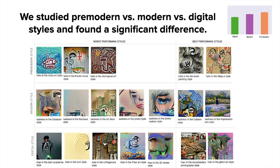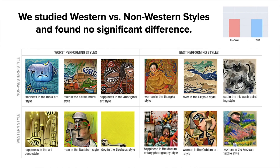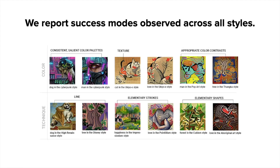However, the difference between Western and non-Western styles was not significant. We concluded that when choosing the style of generation, one can feel free to try any style no matter how niche or broad. In addition to this quantitative analysis, we also analyzed the best and worst performing styles of each partition and summarized success and failure modes. Success modes pertain to color, technique, relationships in space, and motifs. For example, success in terms of color meant correct application of stereotypical color palettes, correct textures, and correct contrasts. Success in terms of technique meant the generations exhibited choices of line, texture, and elementary brush strokes congruent with the original styles.